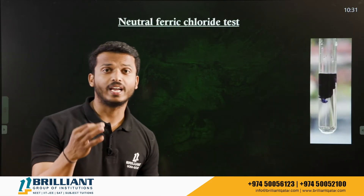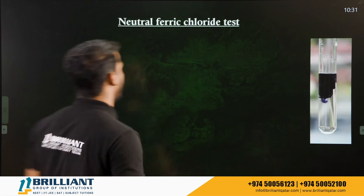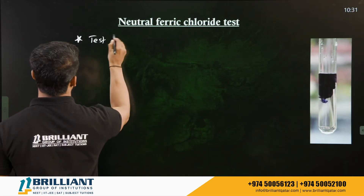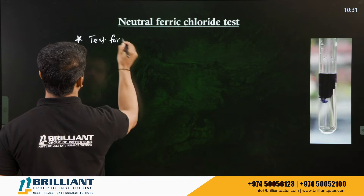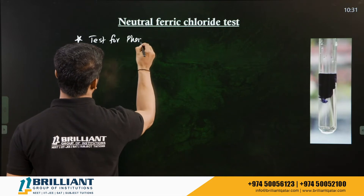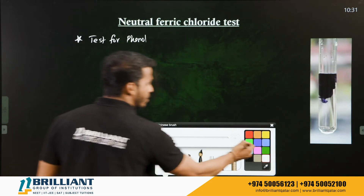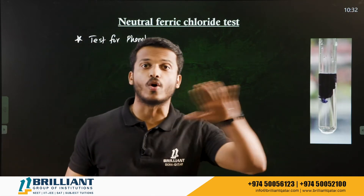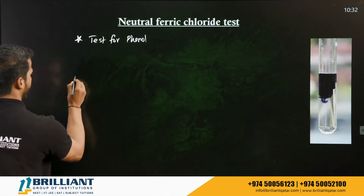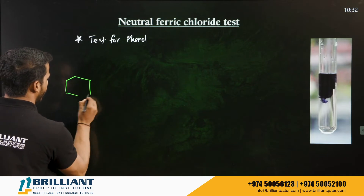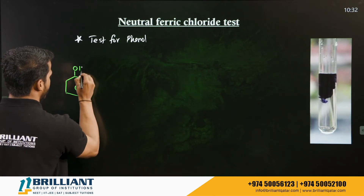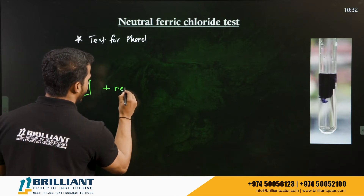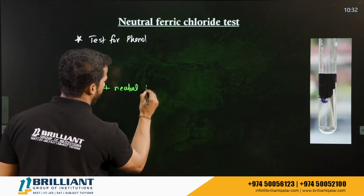The second test is the neutral ferric chloride test. This is a special test for phenol only. If phenol is given along with some other functional group, you can use this test because it is given only by phenol. Phenol is benzene with an –OH group.